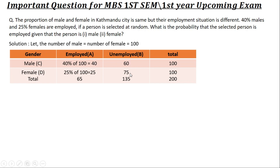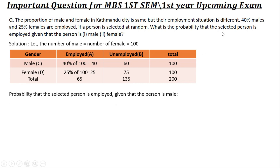The unemployed total is 75 males and 31 females. Now, for conditional probability: what is the probability that the selected person is employed, given that the person is male? We use conditional probability, considering only the male group.